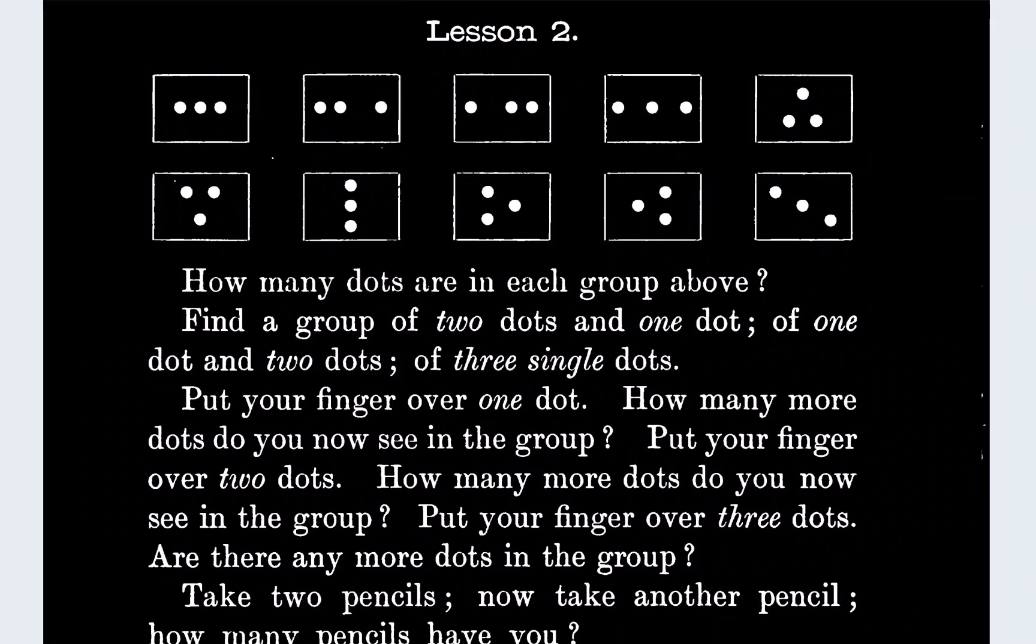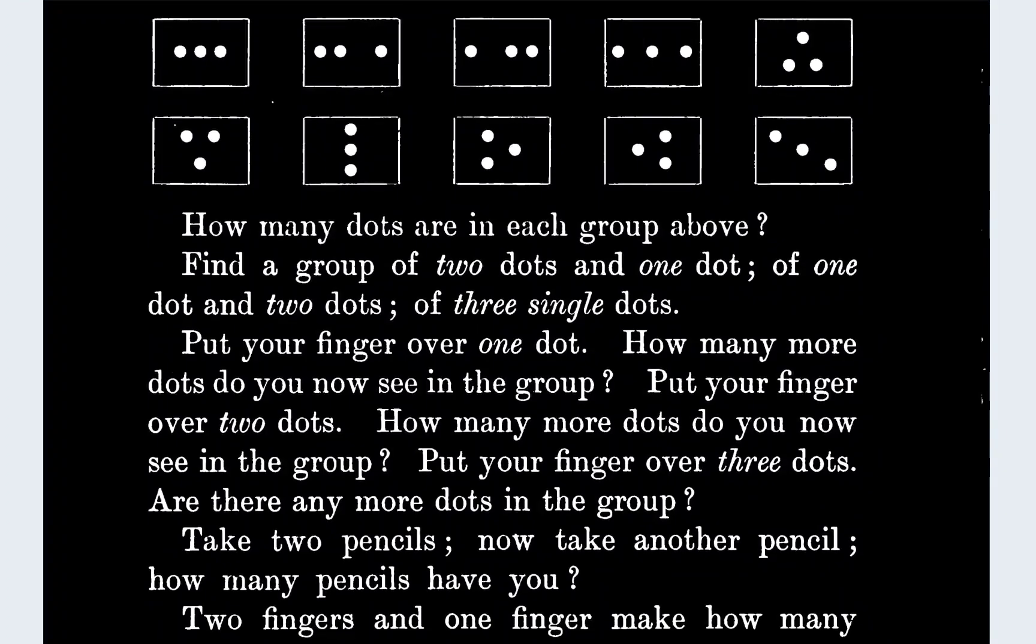The next one says find a group of two dots and one dot. Okay, for this I'm gonna have to mark it on the screen just to say that I did it, because I don't know how else to indicate that I did it.